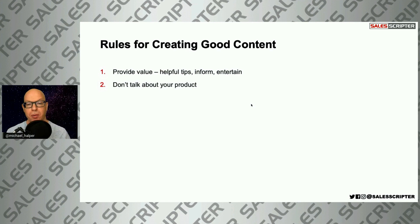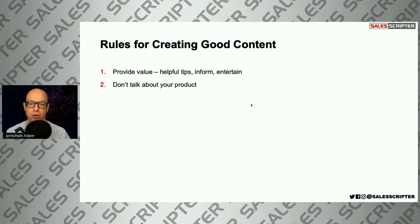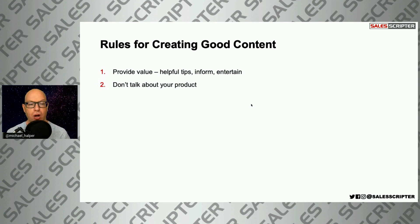The next thing is don't talk about your product in your content. If you have a blog with hundreds of posts, some could be about your product, new releases, or company news — that's okay. But the bulk of the content you create should be helpful, as in rule number one. So minimize how much you talk about your product.